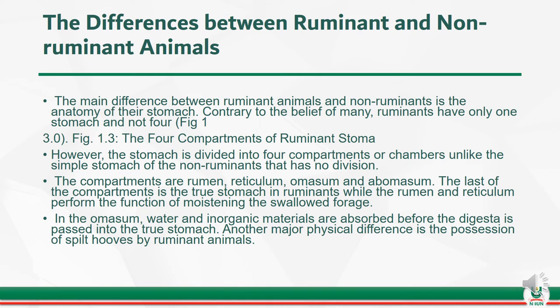What are the differences between ruminant and non-ruminant animals? The main difference between ruminant animals and non-ruminant animals is the anatomy of their stomach. Contrary to the belief of many, ruminants have only one stomach and not four.